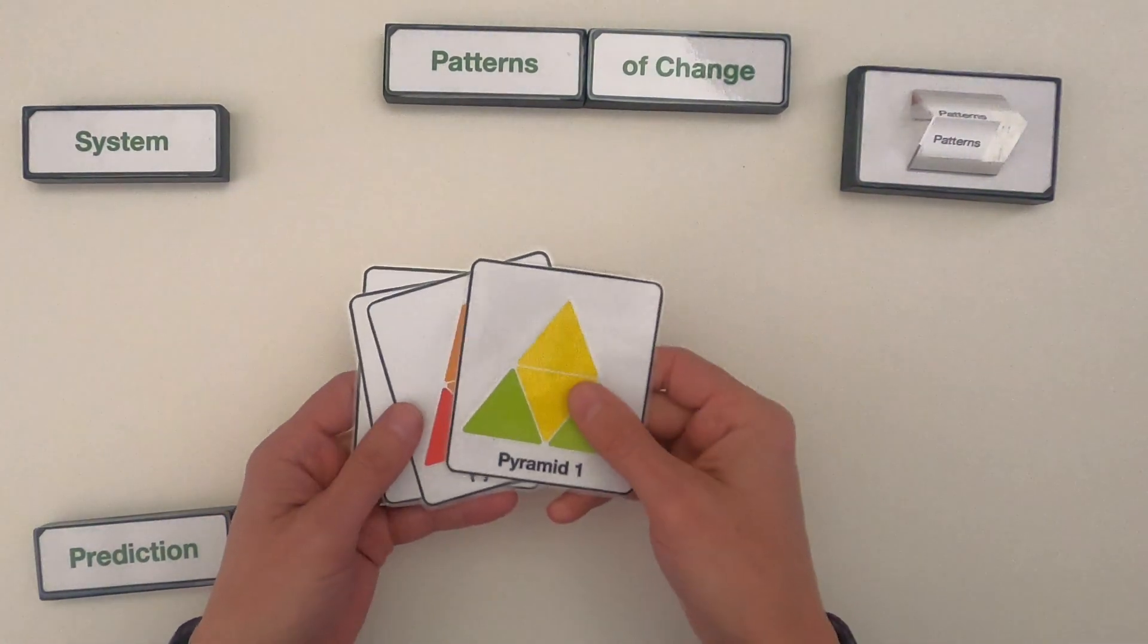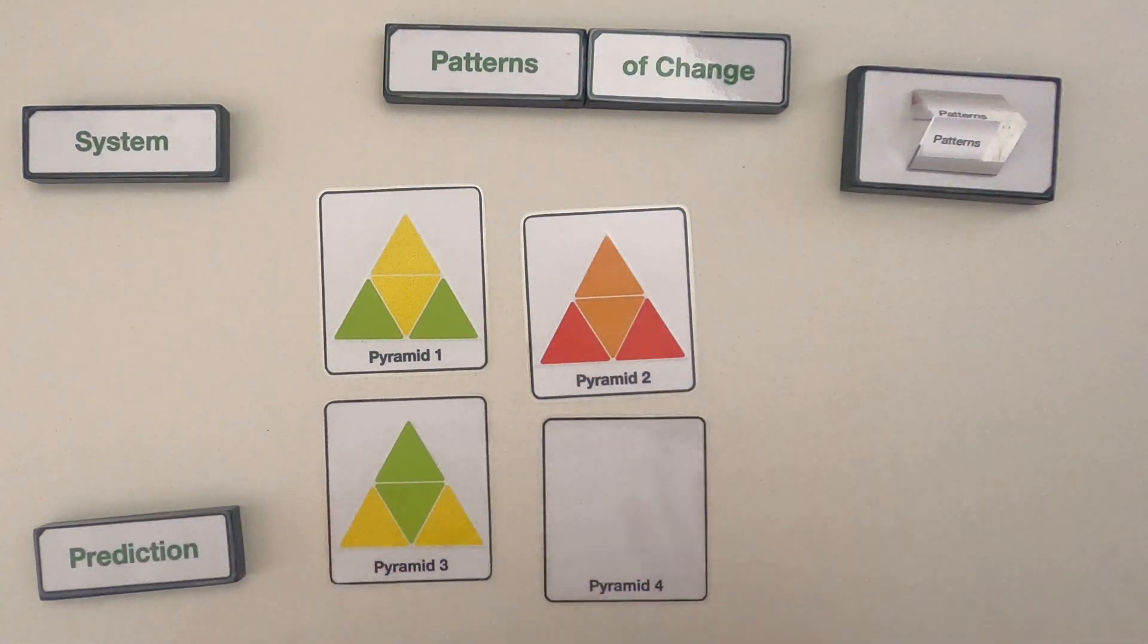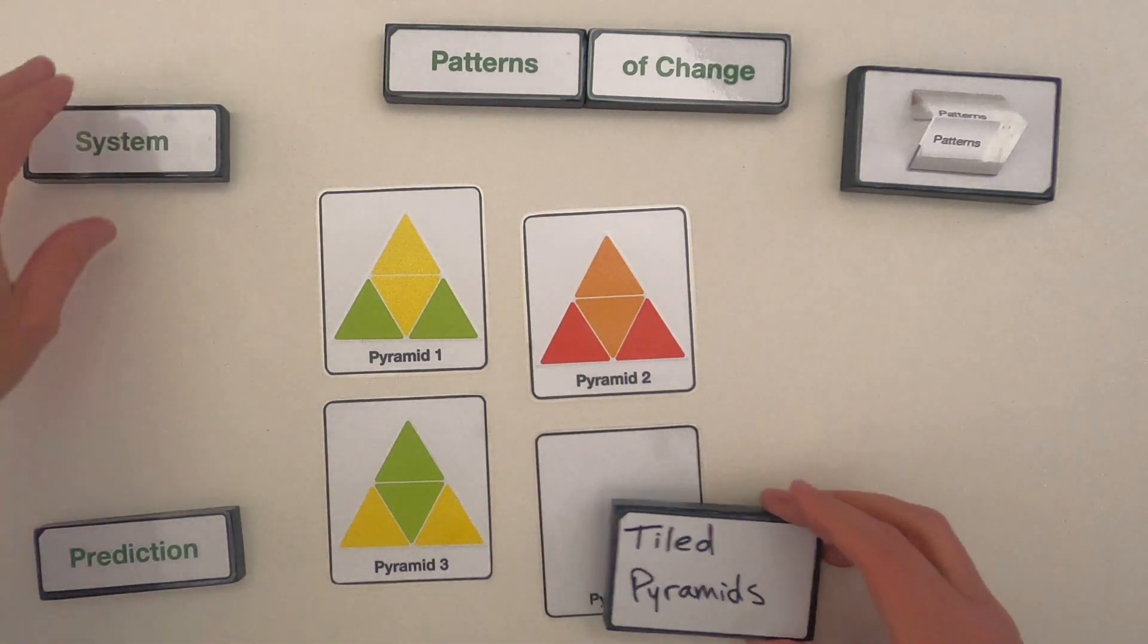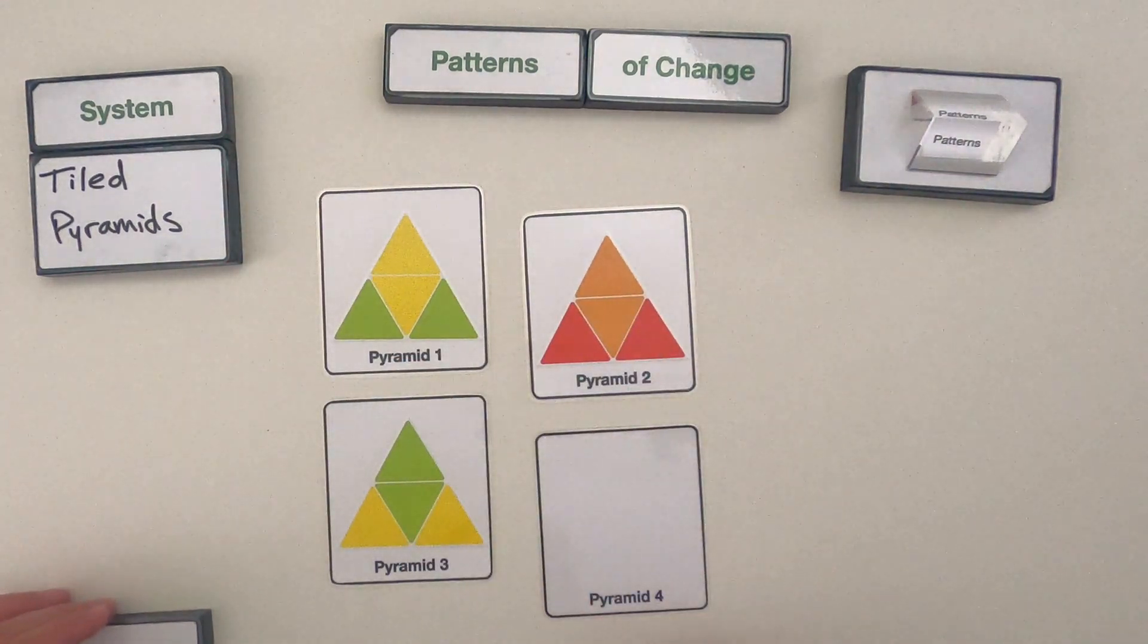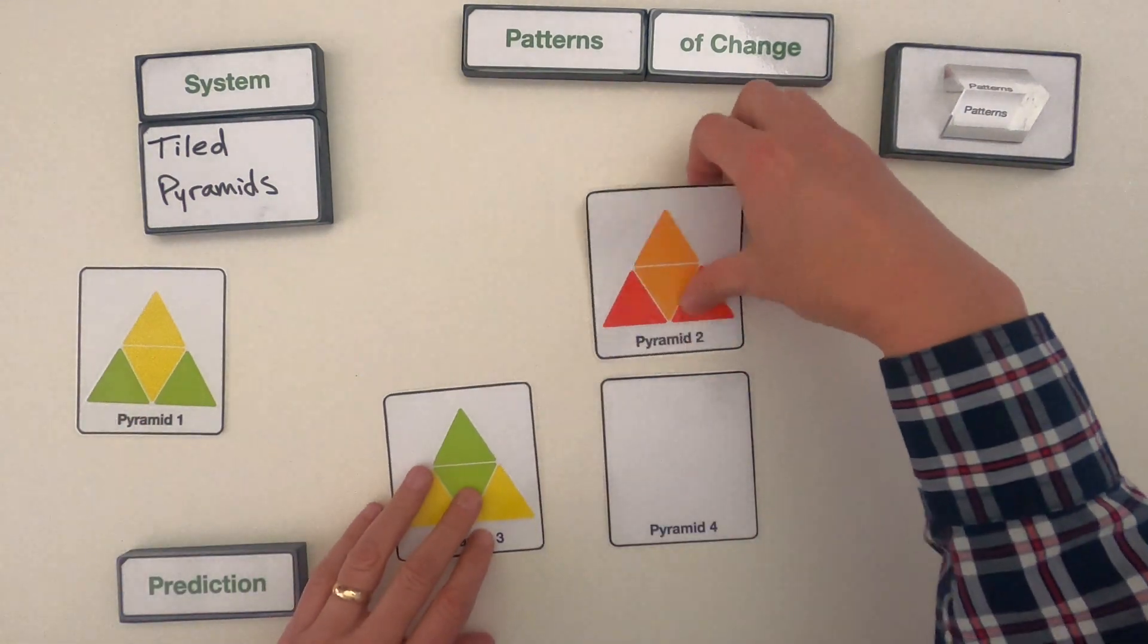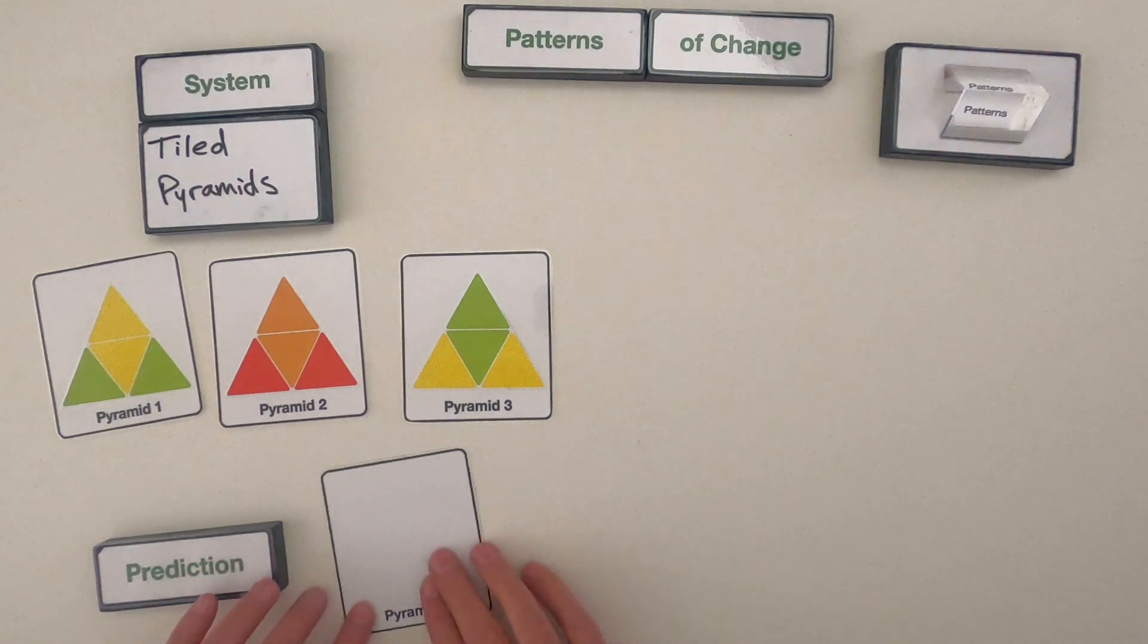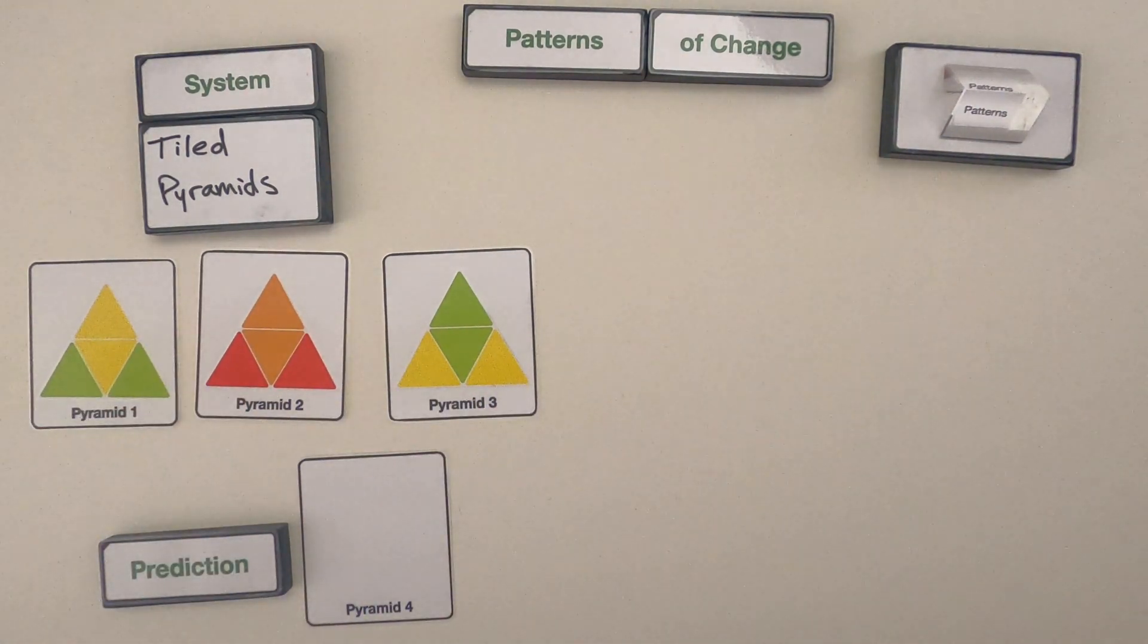The first thing we should always do when we're looking at any kind of a new system is we should define the system that we're going to investigate. So we're going to be looking at patterns of change in these tiled pyramids. We should put those in order from pyramid 1 to pyramid 2 to pyramid 3. And then you can see right here this is going to be where we start to make our predictions.